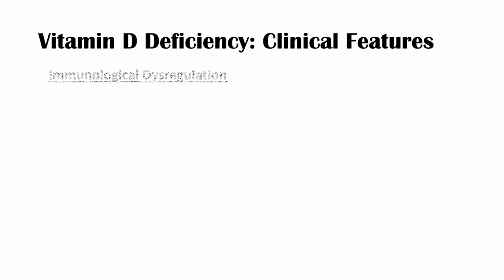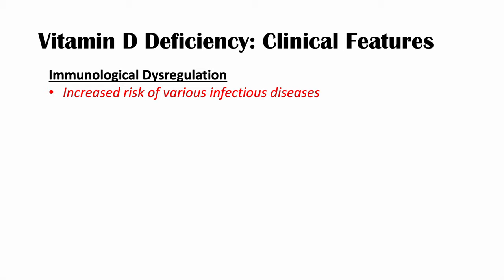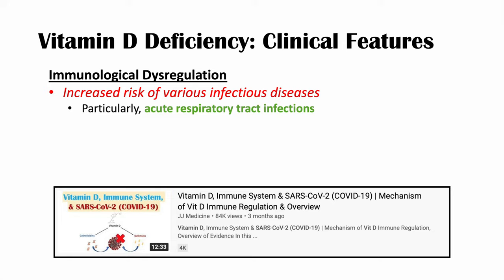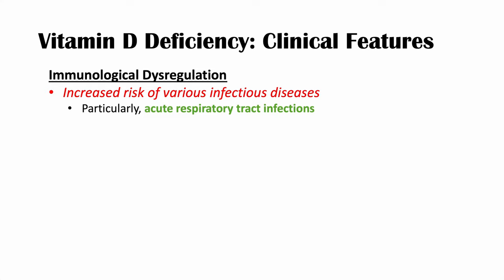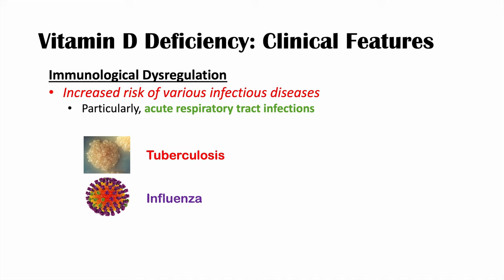Other clinical features of vitamin D deficiency include immunological dysregulation. Vitamin D deficiency is associated with an increased risk of various infectious diseases. In particular, acute respiratory tract infections occur more frequently in those with vitamin D deficiency. Patients who are vitamin D deficient are at increased risk for tuberculosis, influenza, and bacterial vaginosis, among others.